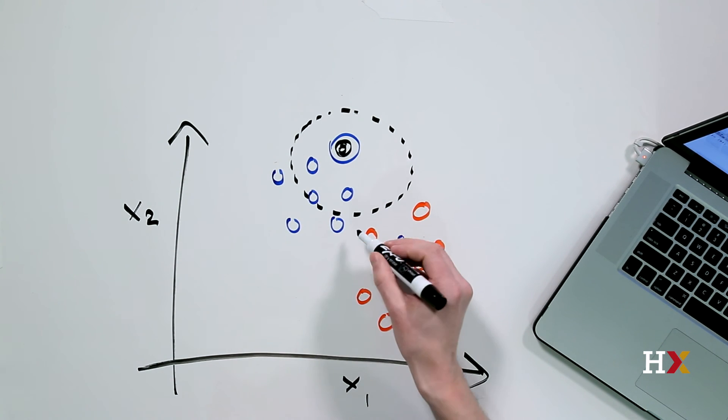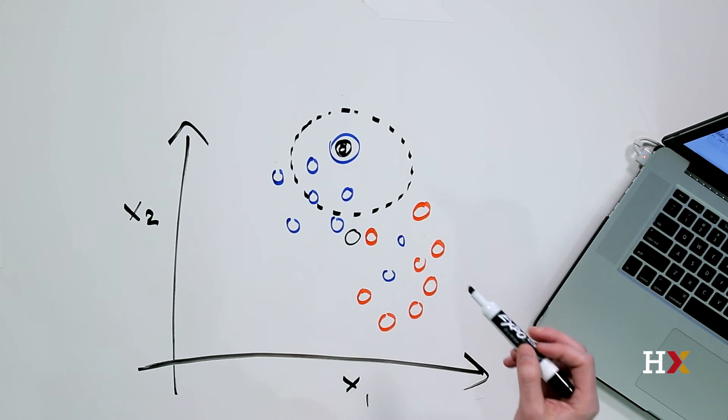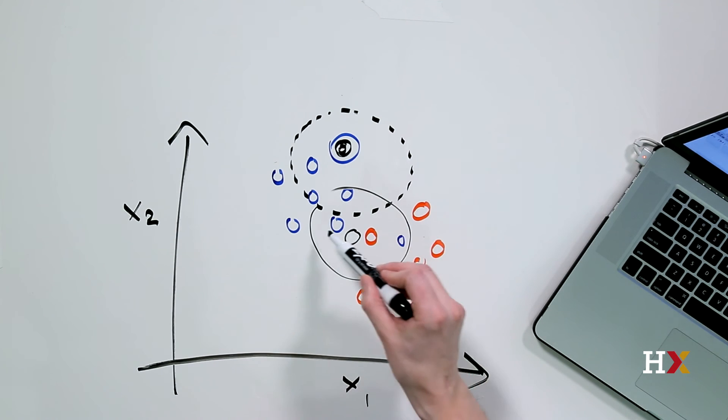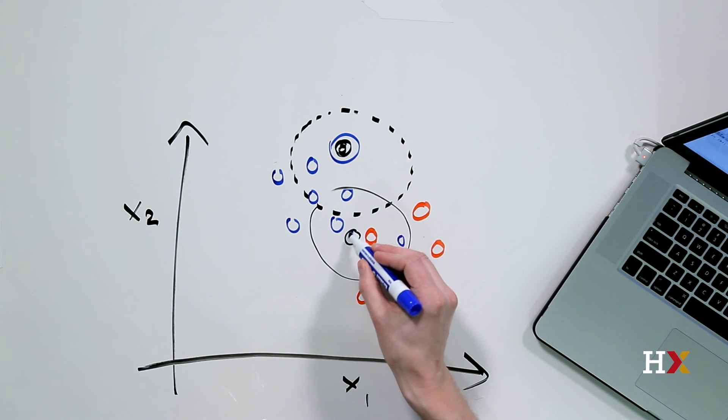In the second example, if we had assigned k to be equal to 4, we would be looking at the four nearest neighbors. In this case, we have three blue dots and one red dot. Because the blue dots are in the majority, we would assign this new observation to the blue category.